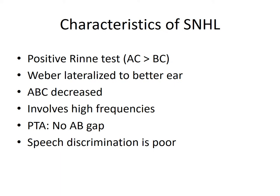The characteristic features of sensorineural hearing loss: on tuning fork test, the Rinne test will be positive — air conduction greater than bone conduction. The Weber test will be lateralized to the better ear; for example, if the patient has SNHL in the right ear, Weber will lateralize to the left ear. The absolute bone conduction will be decreased compared to the examiner. Generally, higher frequencies are affected more. On audiogram, there is no air-bone gap, as an air-bone gap is suggestive of a conductive component. Speech discrimination is poor — patients may hear sound but are not able to understand speech.